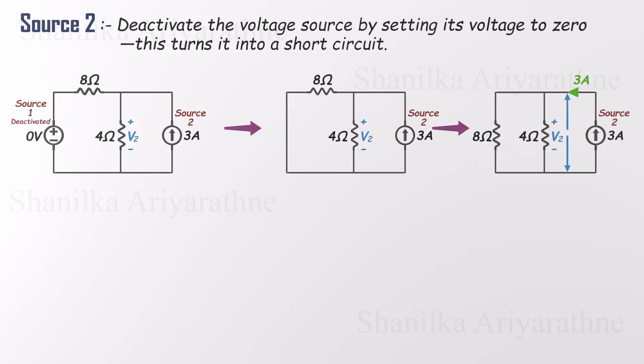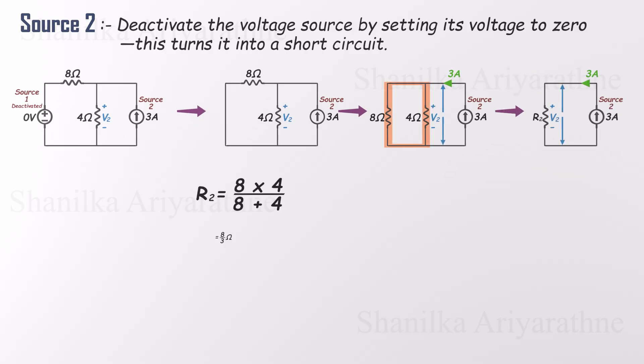With the voltage source shorted, the circuit simplifies to a current source and two resistors, 8 ohms and 4 ohms, connected in parallel. Let's find their total resistance. It's 8 over 3 ohms. Now we can calculate the voltage across this parallel network using Ohm's law. So the current source contributes 8 volts across the 4 ohm resistor.